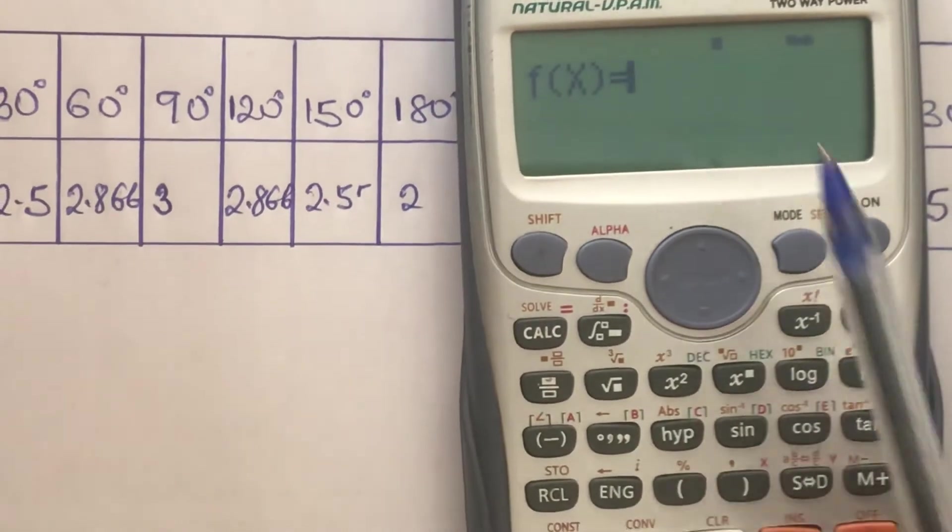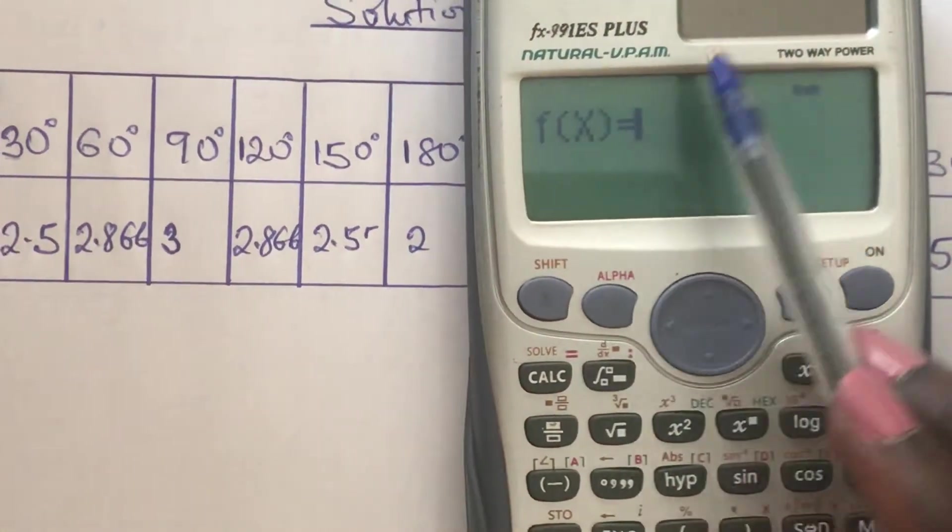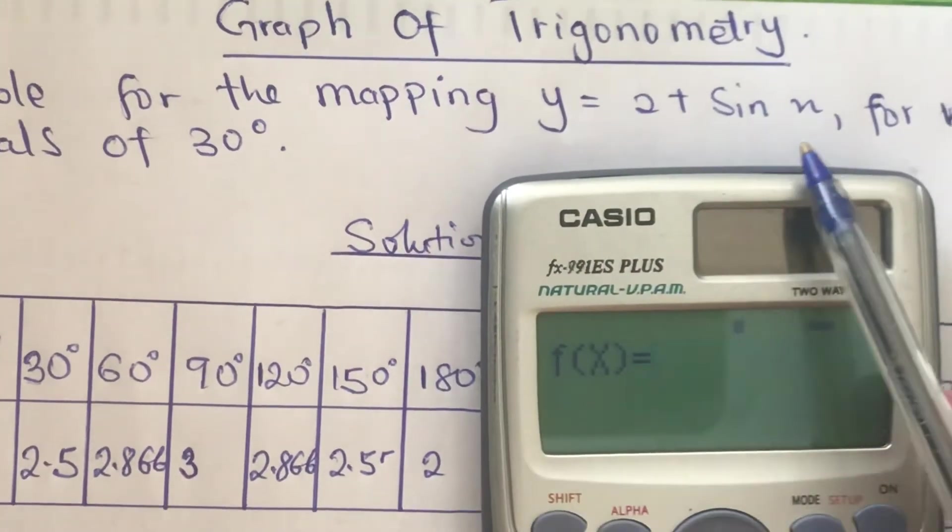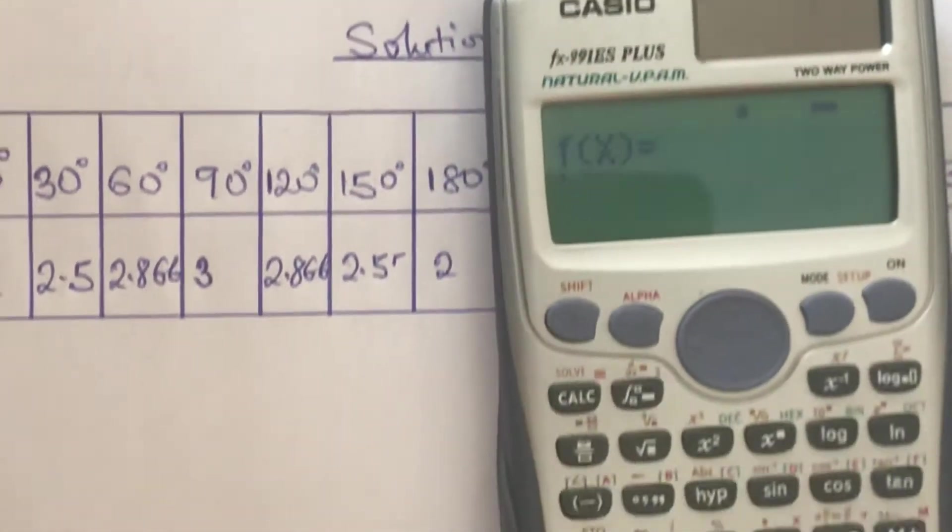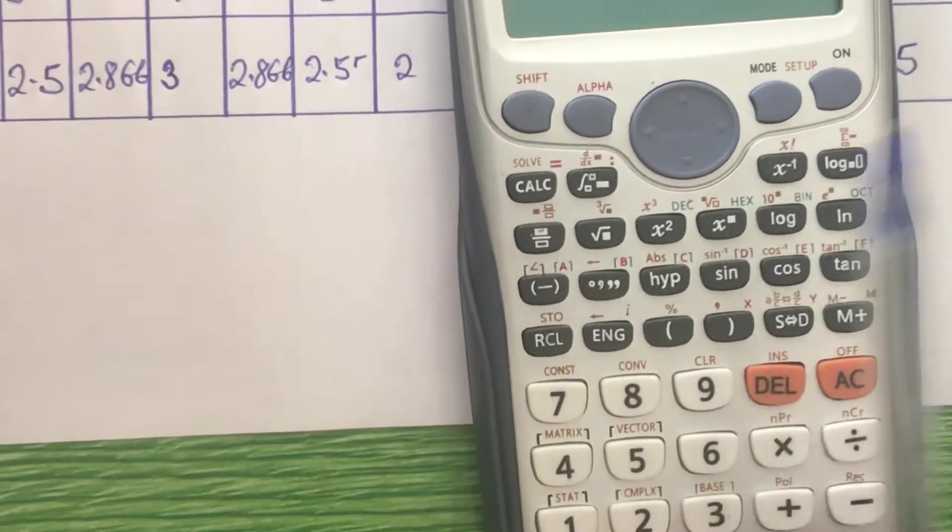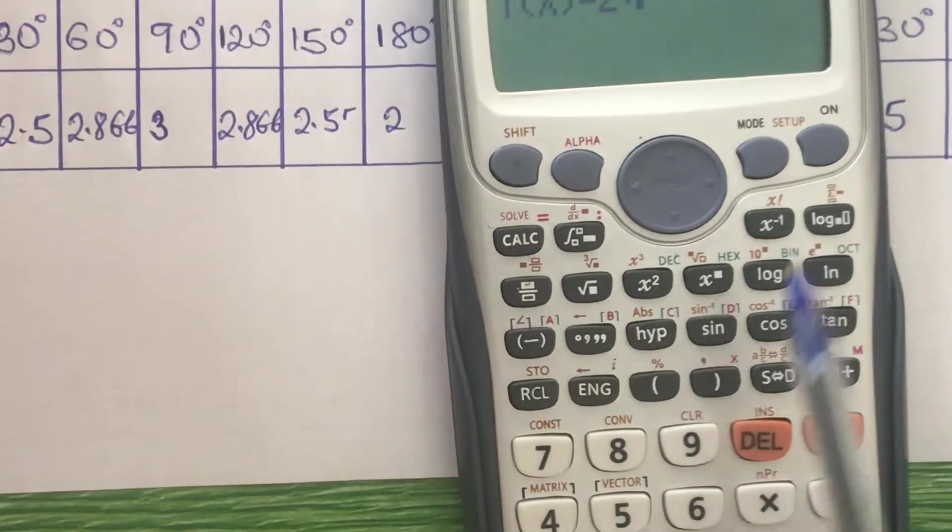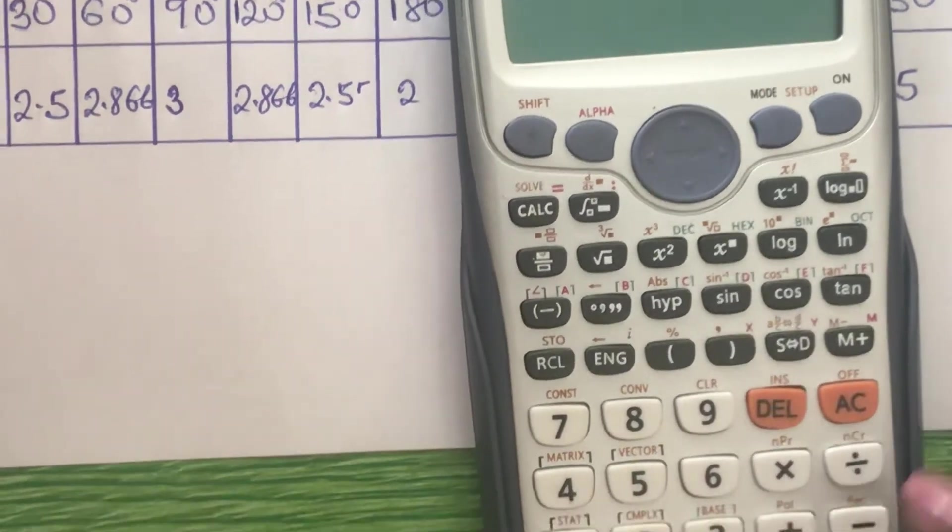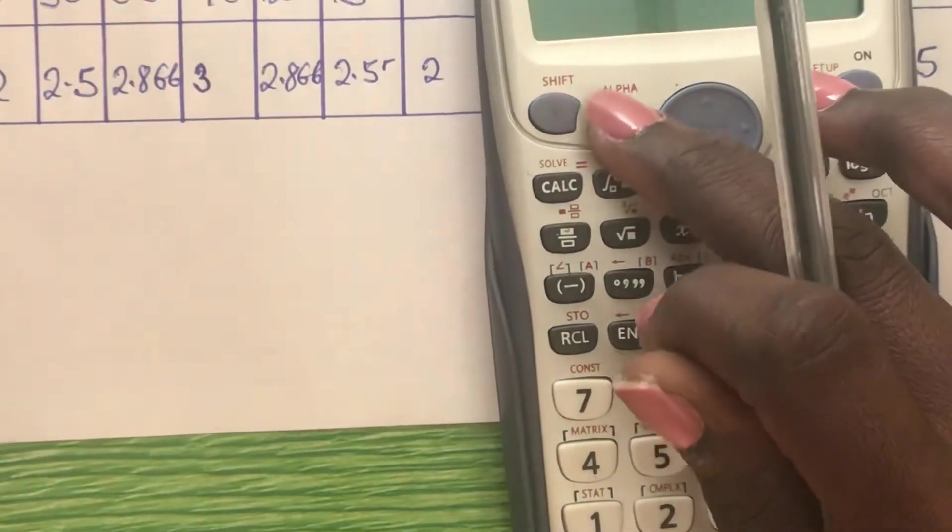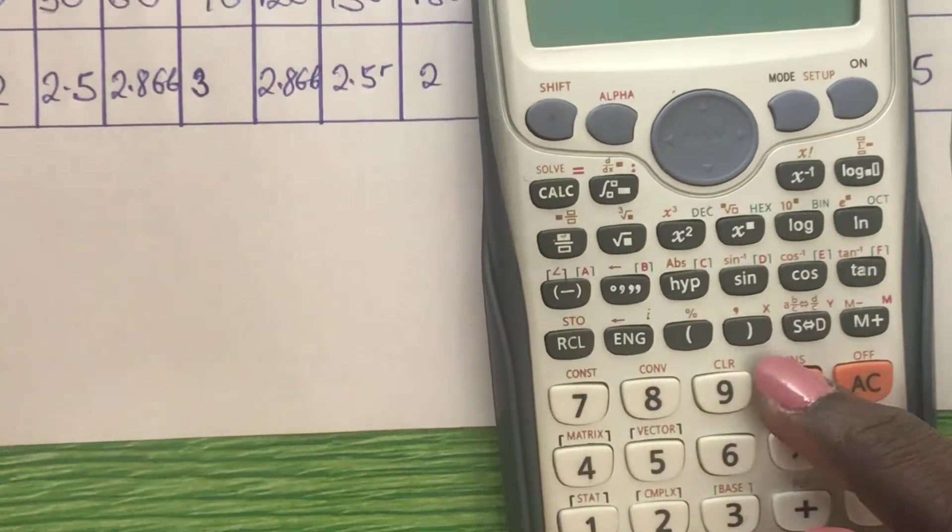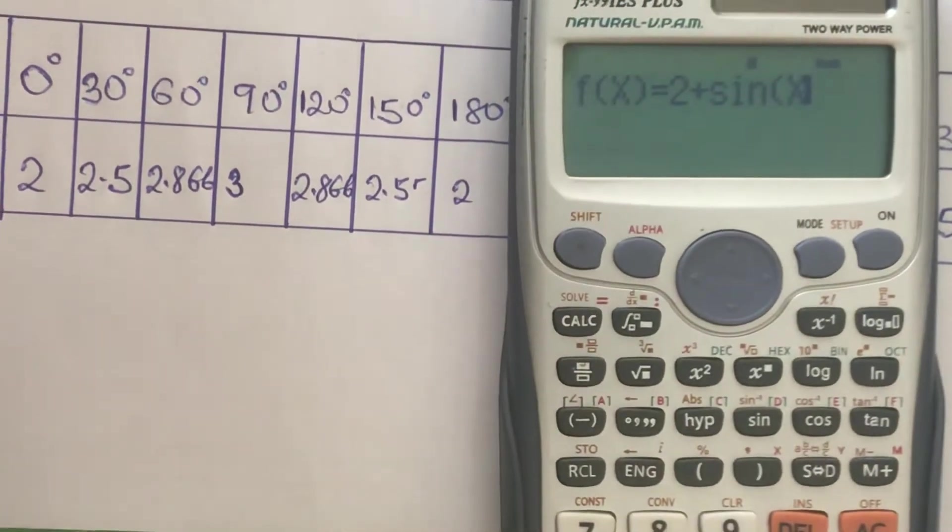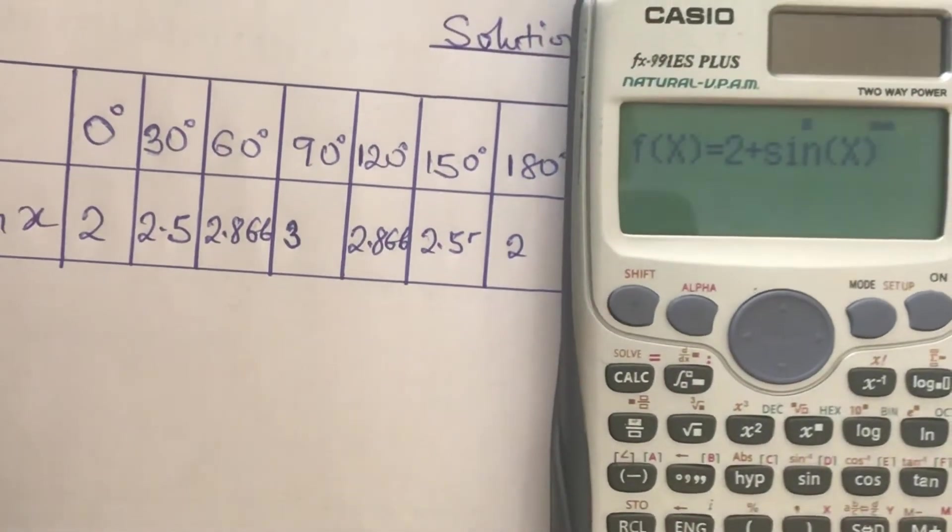We have to now input our function. The equation is 2 plus sin x. So let's tap it together: 2 plus sin x. For you to get your x value, you have to tap on the alpha key, then tap on the bracket. So we have our x key now, then we close our bracket.